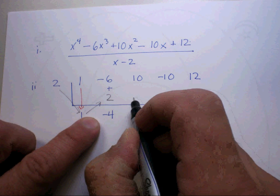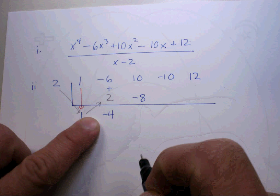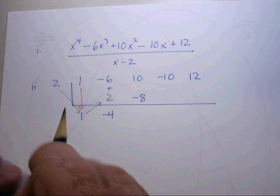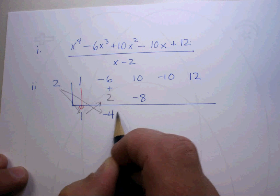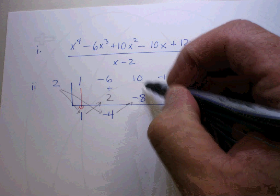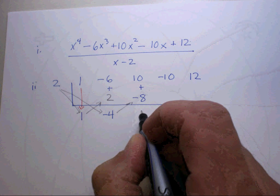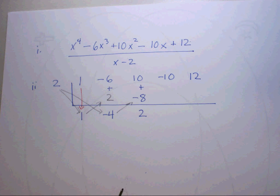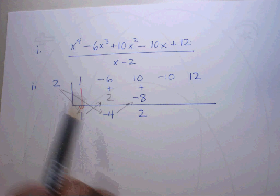Then you start all over again, the whole process. 2 times negative 4 gives you negative 8. Again, let's go ahead and make sure we're clear on that. That times that, and you put it there. Then you go ahead and add these two numbers and you get 2.